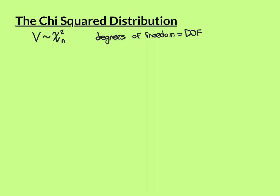Similarly, the chi-square distribution is a class or family of distributions. However, in chi-square there is only one parameter rather than two as in the normal distribution. That parameter has a special name: it's called the degrees of freedom. We write a random variable V as distributed chi-squared, using the Greek letter chi — this fancy curly x — squared, with the parameter n in a subscript, where n is the degrees of freedom.